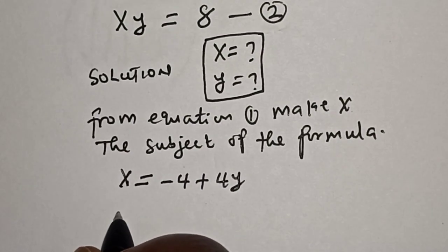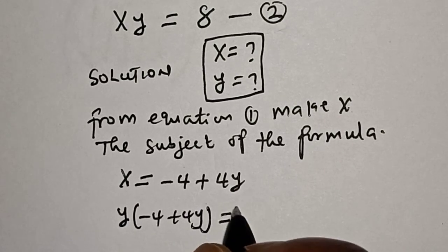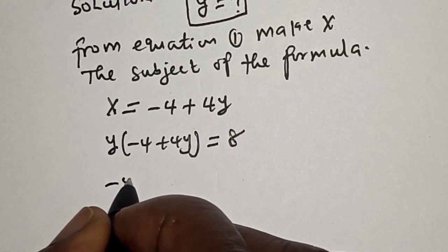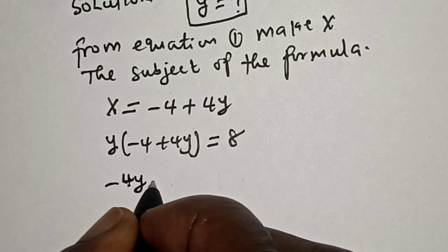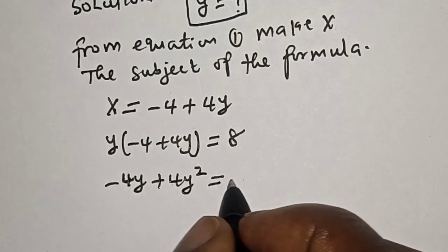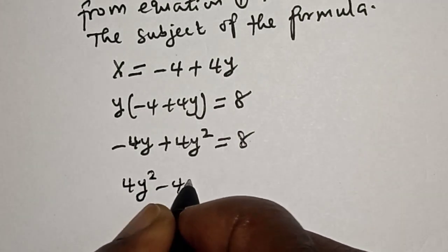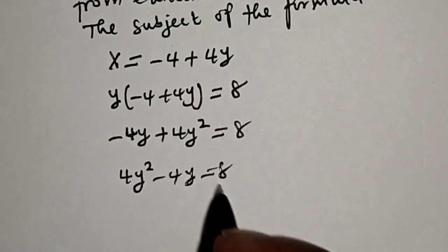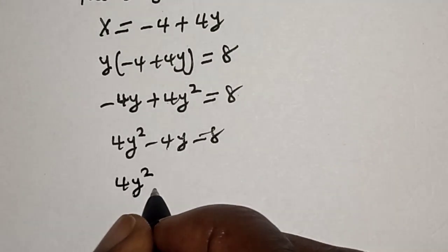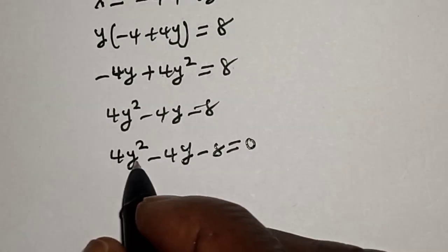Now let's substitute for x in equation 2. That is y into (minus 4 plus 4y) is equal to 8. Opening the bracket we have minus 4y plus 4y² is equal to 8. Rearranging, we have 4y² minus 4y is equal to 8.